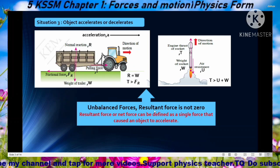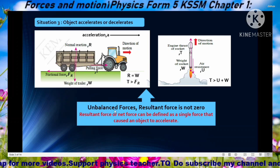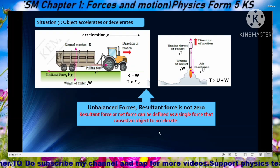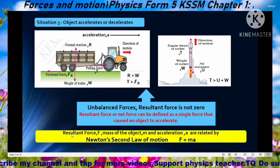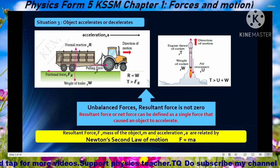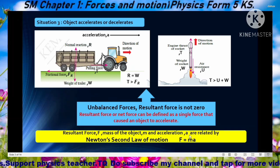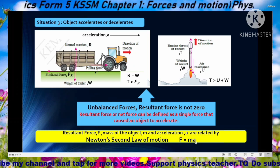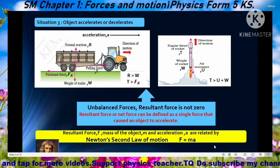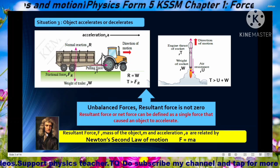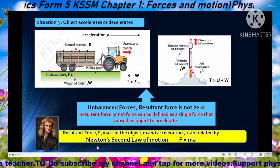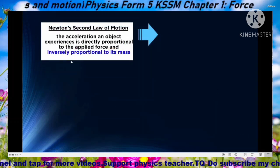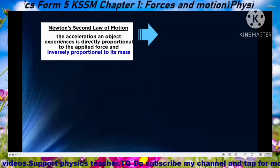Remember: if forces are balanced, resultant force is zero; if unbalanced, resultant force is not zero. Resultant force F, mass M, and acceleration of the object are related by Newton's second law of motion, stated by the formula F equals MA — produced by Isaac Newton. Next we want to discuss more about Newton's second law of motion.